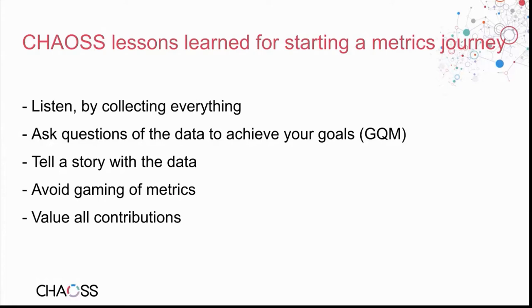Data by itself, metrics by themselves, or nice pretty graphs are not enough — we need to tell a story with the data. Community health is very context-driven. For example, a graph showing new issues have gone up can be good or bad: it might mean more users are asking questions, or a recent release had many bugs, or Google Summer of Code is coming up and more students are interested. You need to understand the community and the context around it, then use the data to tell that story.